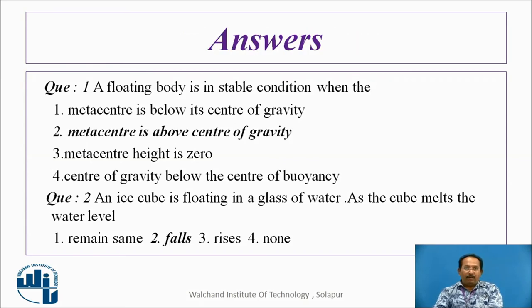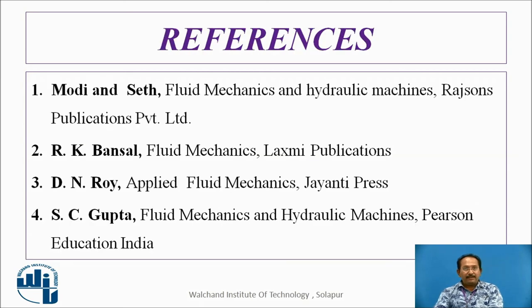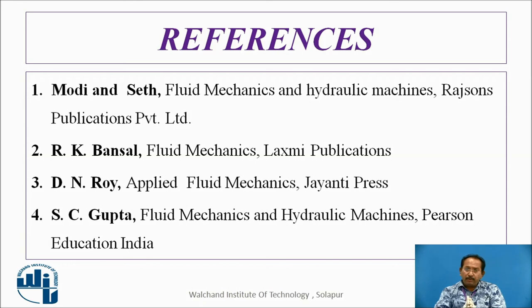The answer: a floating body is in stable condition when the metacenter is above the center of gravity. An ice cube floating in a glass of water — as the cube melts, the water level falls. For references, you can use Bodhisattva, Bansal, Roy, Gupta, or Srotri. Many books with different examples are available so you can solve problems related to stable and unstable conditions and understand how the analytical method is useful. If you find any difficulties, you can contact me. Thank you.